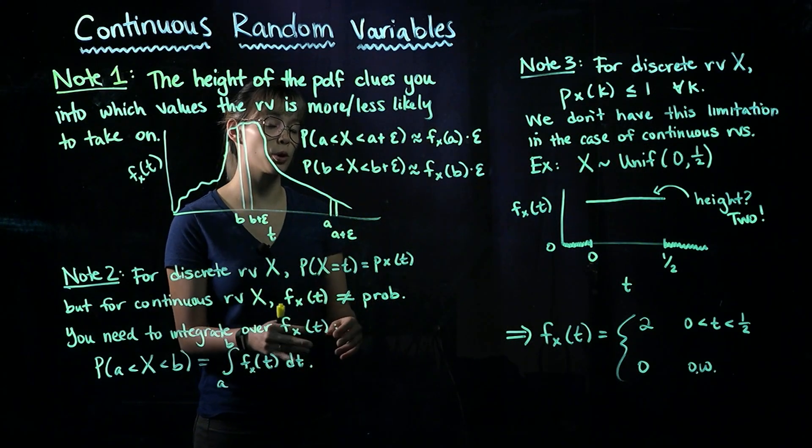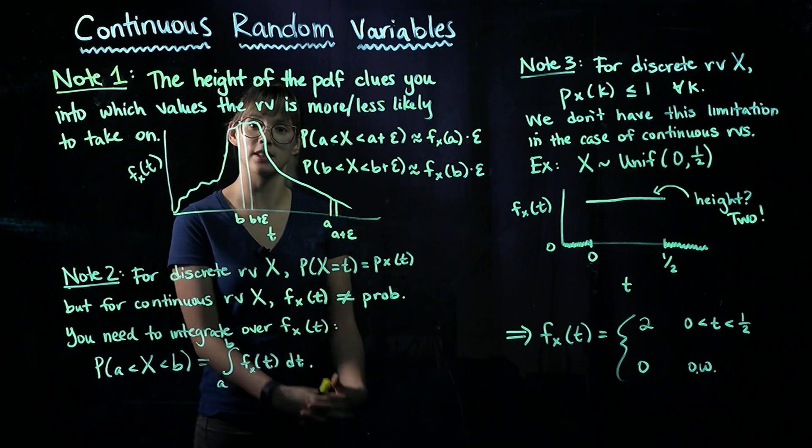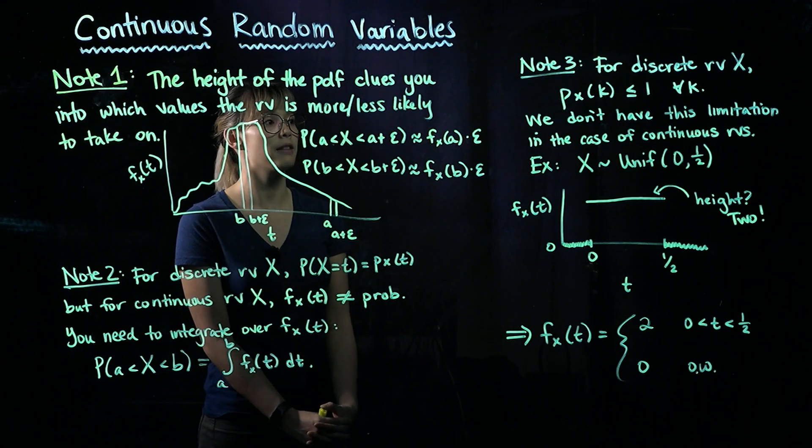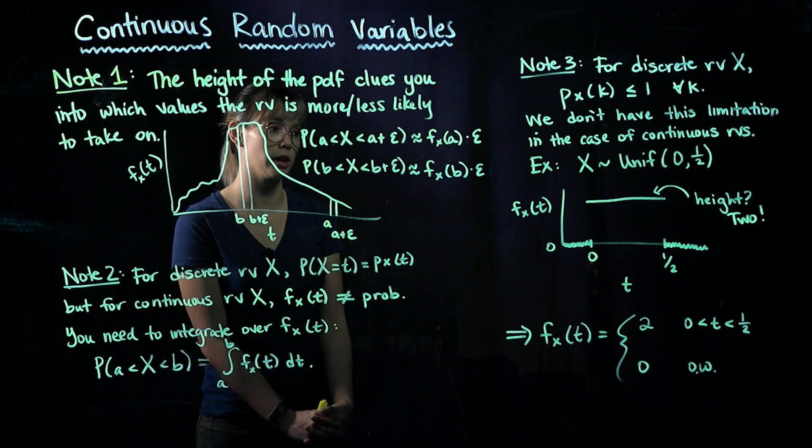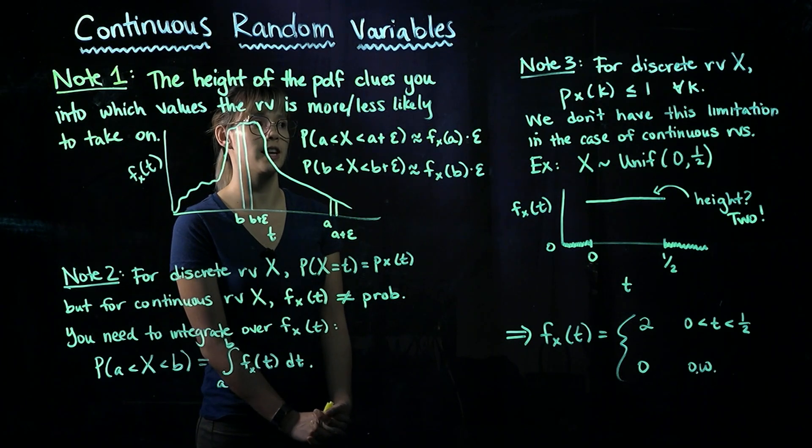Alright, third note. Again, we're going to do a little comparing and contrasting to the discrete case. When we have a discrete random variable X, then the PMF is always less than or equal to 1 for any value that our random variable takes on.